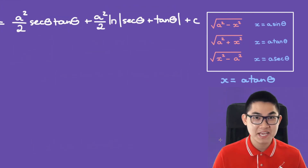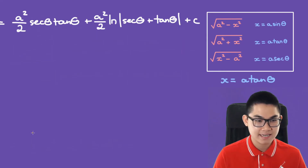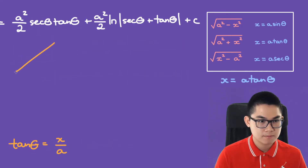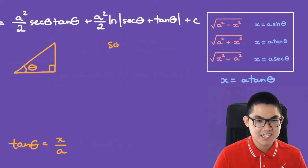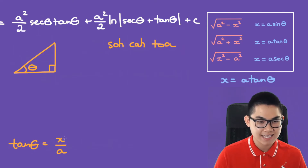Remember, at the beginning we said x is equal to a times tan. So if x equals a times tan, then tan is going to be x over a. Using the SOHCAHTOA rule, tan is opposite over adjacent. So the opposite is x and the adjacent is a.